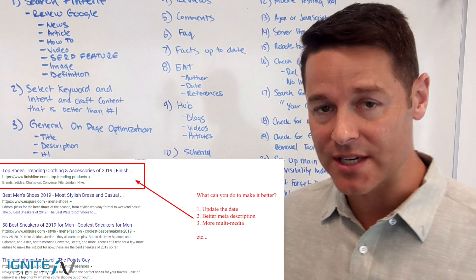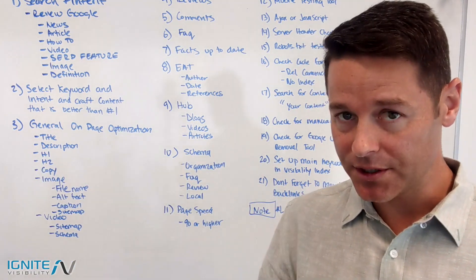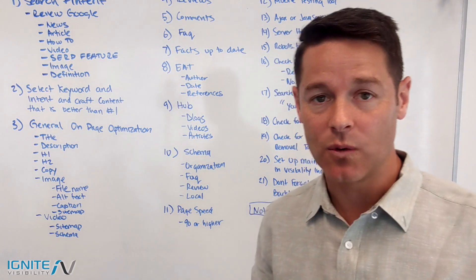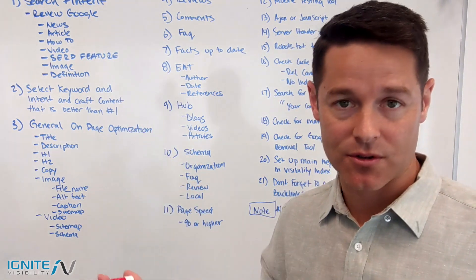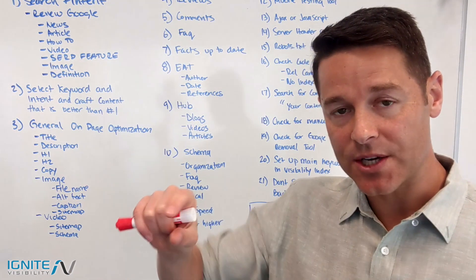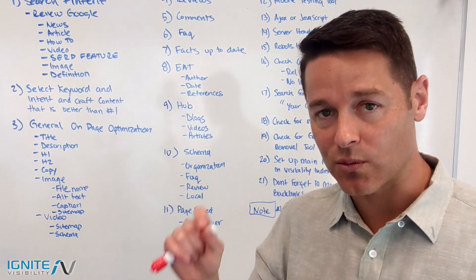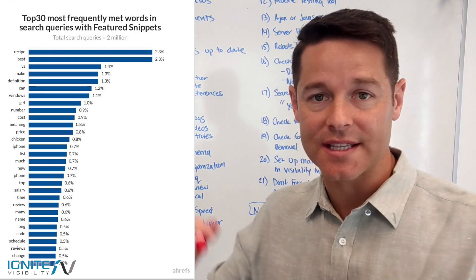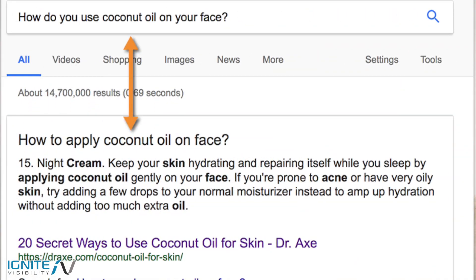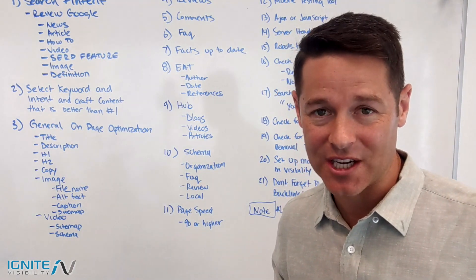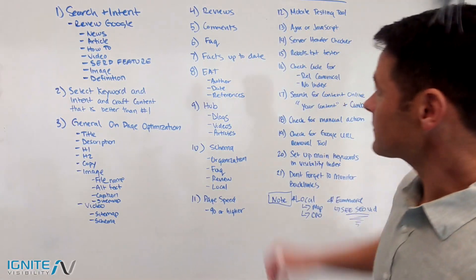Whatever type of content you decide to make, you still want to work the keyword into those general on-page elements. The most important things are titles, descriptions, and any additional features you can create in Google, because that's what gets you extra clicks. For H1s and H2s, if you want to show up in voice search and create a rich result, make that heading a question with a direct answer or five to six bullet points underneath it, or text that is 50 to 70 characters — that's what creates rich results which can turn into voice responses.